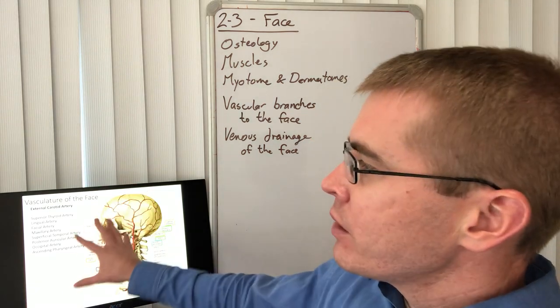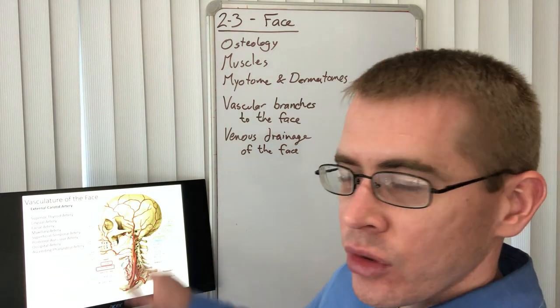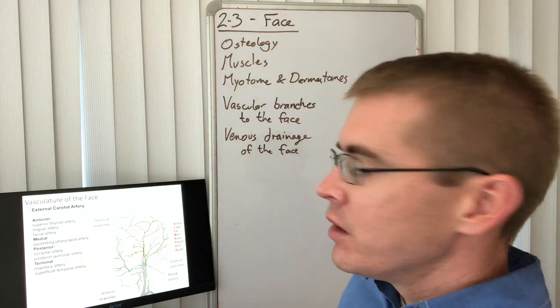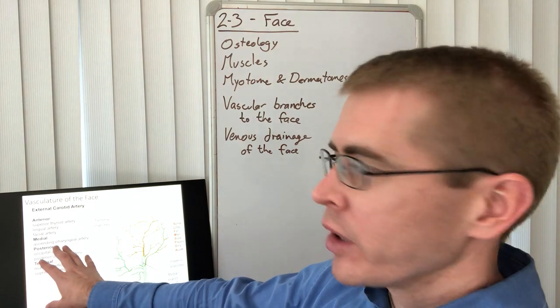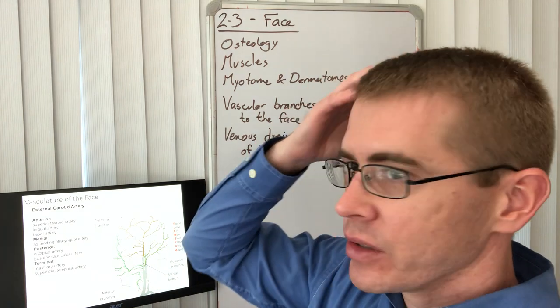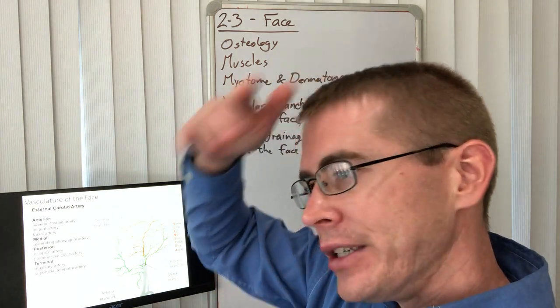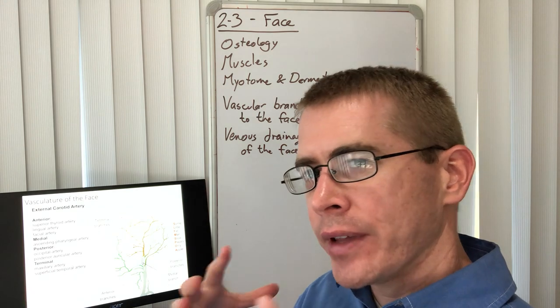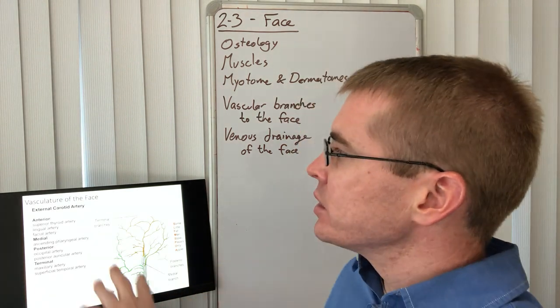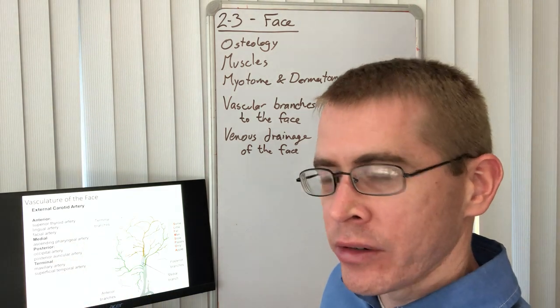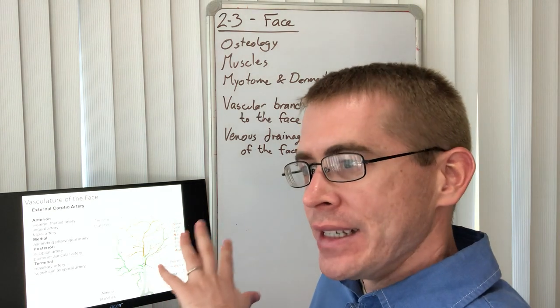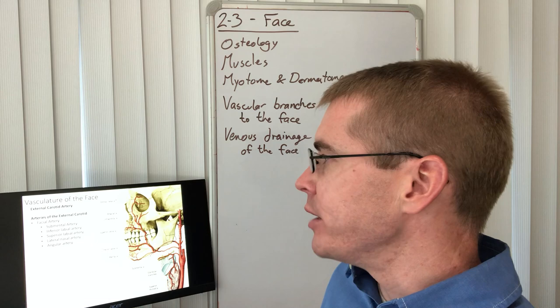Again, we're looking at this mnemonic to memorize all the branches of the external carotid, and we're moving on from there. Some textbooks do a different organization - they organize it by anterior, medial, posterior, and terminal branches. I don't like that organization. That's why I've kept it with the mnemonic. That's easy, simple. This is unnecessarily complicated. It's more to remember. So just in case you see a textbook that differentiates it in this way, you'll know why I don't like it.